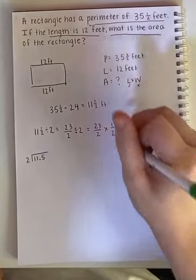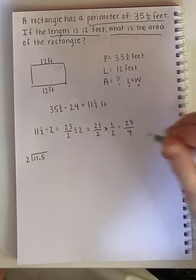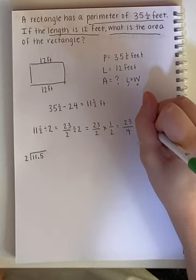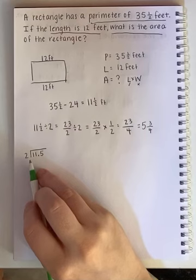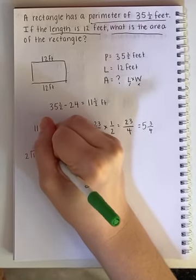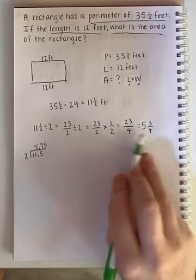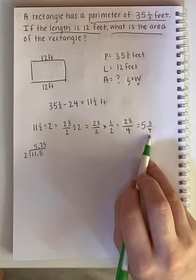You should have gotten 23 over 4. And then you can't keep that as an improper fraction. So you should have gotten 5 and 3 fourths. Over here you would have gotten 5.75. 5.75 and 5 and 3 fourths are the same. This is just a decimal. That is a mixed number. Okay.